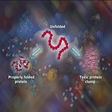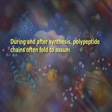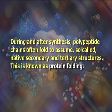The events following biosynthesis include post-translational modification and protein folding. During and after synthesis, polypeptide chains often fold to assume so-called native, secondary, and tertiary structures — this is known as protein folding. After protein amino acid sequences have been translated from nucleic acid chains, they can be edited by appropriate enzymes, although this is a form of protein affecting protein sequence not explicitly covered by the central dogma.